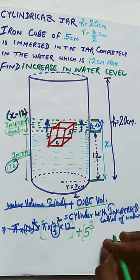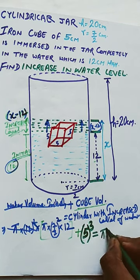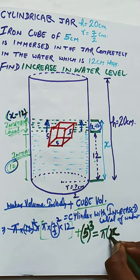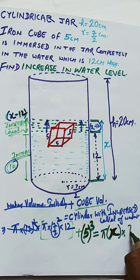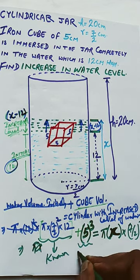So πr²h, we keep the value of 12 and add up with the volume of cube. That will be equal to πr²h with extended level. Only one unknown we calculate.